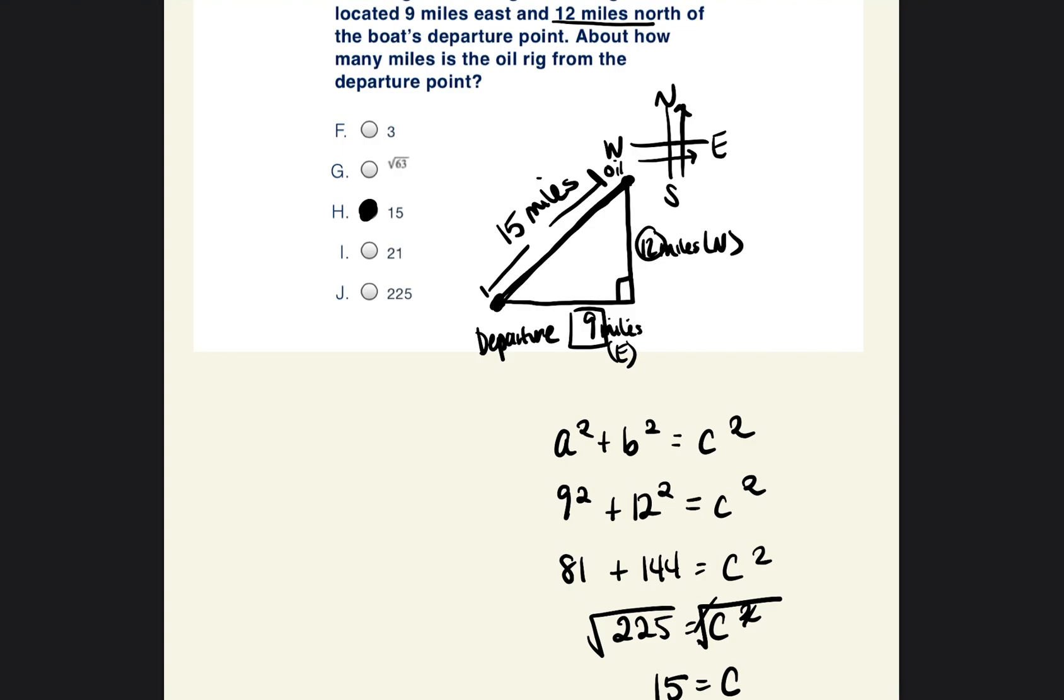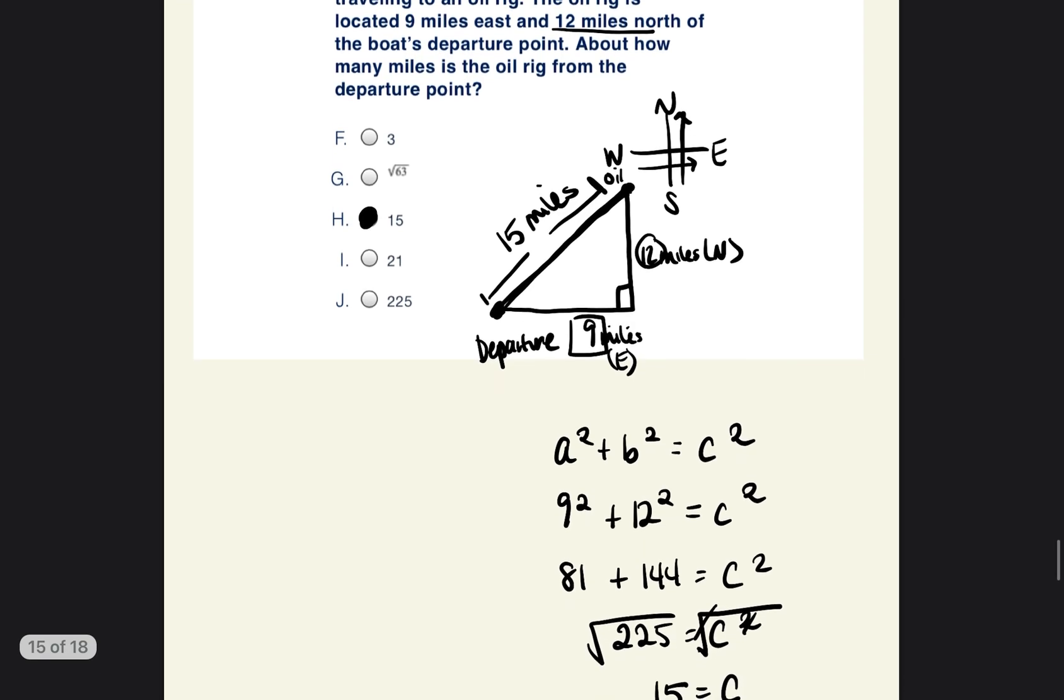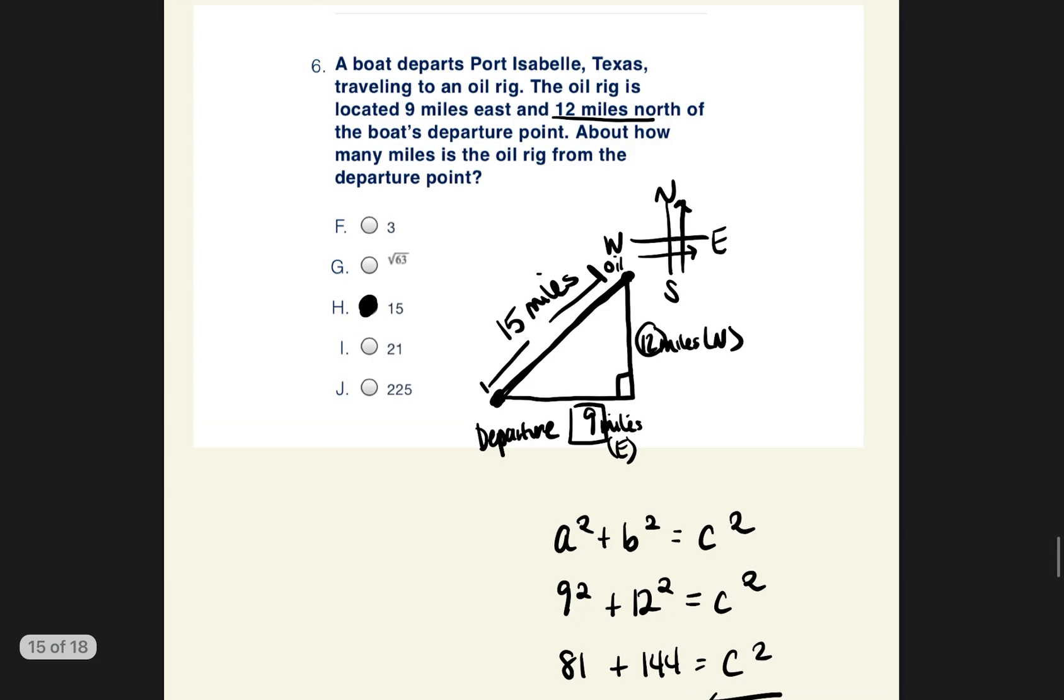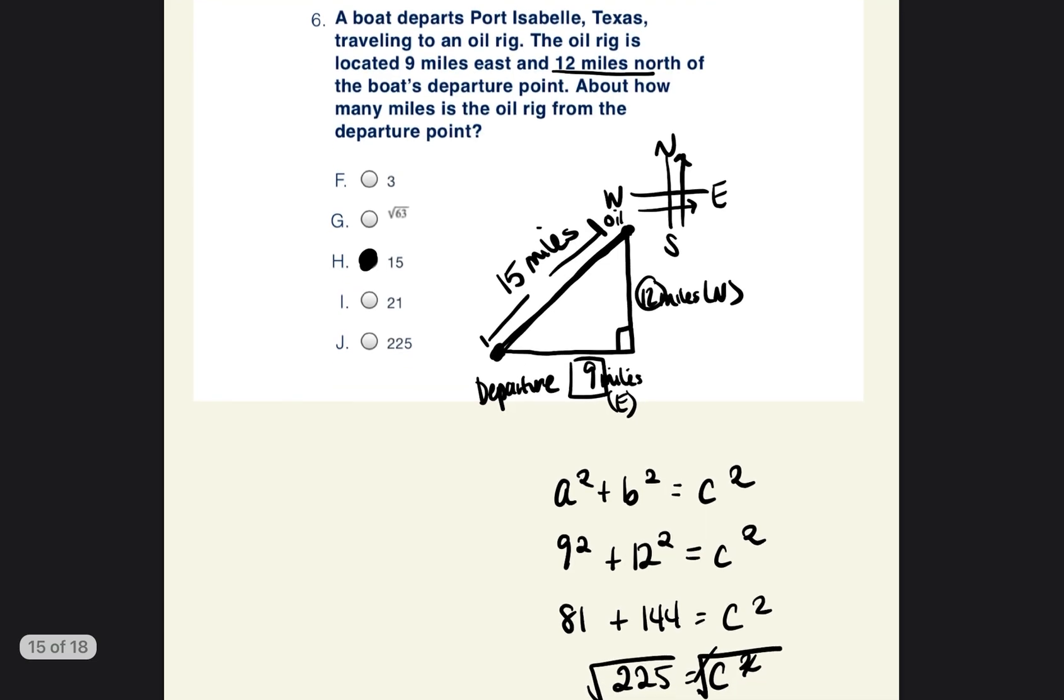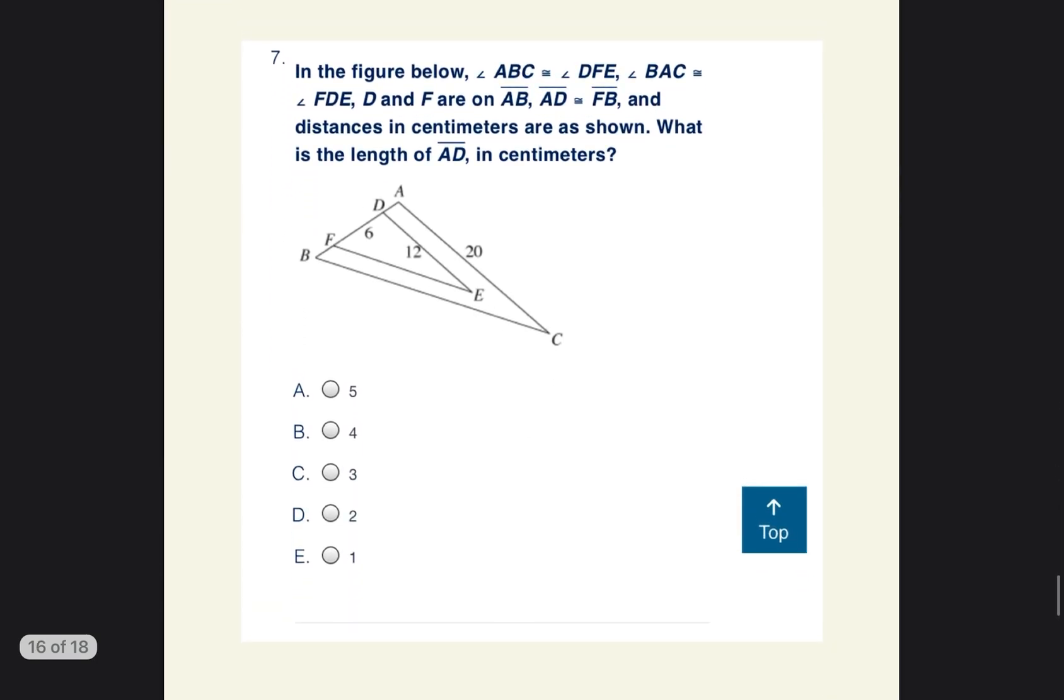So it's 15 miles from the departure point directly to the oil rig. So the answer is going to be H. And what really helped us here is that we drew a picture. So just never be afraid to draw a picture when you're taking your test on your scrap paper. It doesn't really matter what other people see or think - it's just about being able to get the right answer.